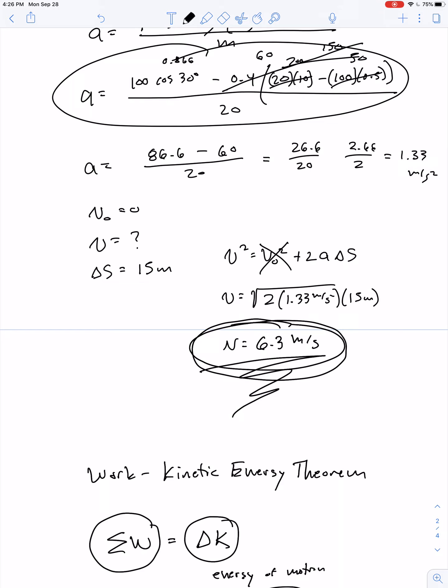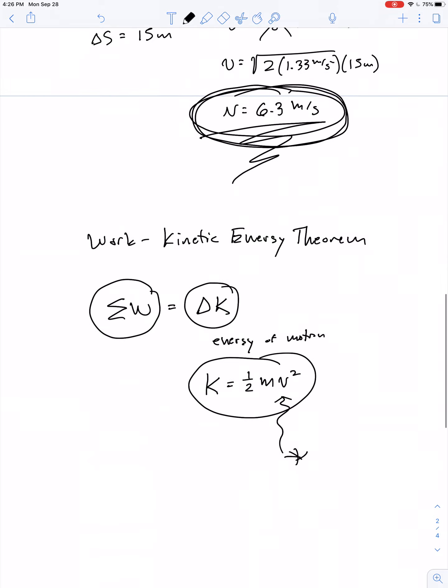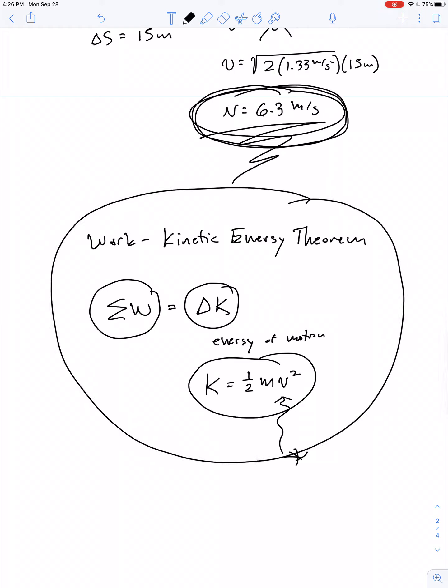It's nice to have more than one approach for solving for a quantity. So we can use Newton's laws and kinematics to get the result for final velocity, and in future example problems, we'll use the work kinetic energy theorem as well. And if both results give us the same answer, then we can be certain we got it right. Thanks for watching.